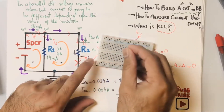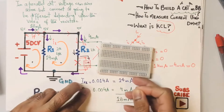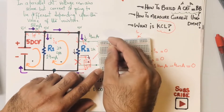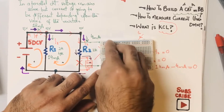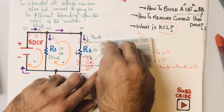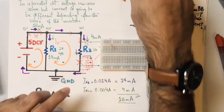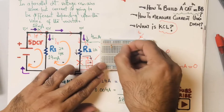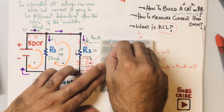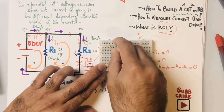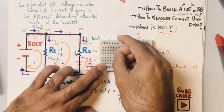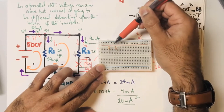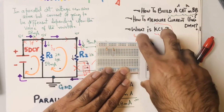I'll take just two random resistors. If I put these resistors right here, both resistors have their terminals connected to the positive terminal of the battery. This terminal and this resistor are connected to the same terminal — so you have five volts here.